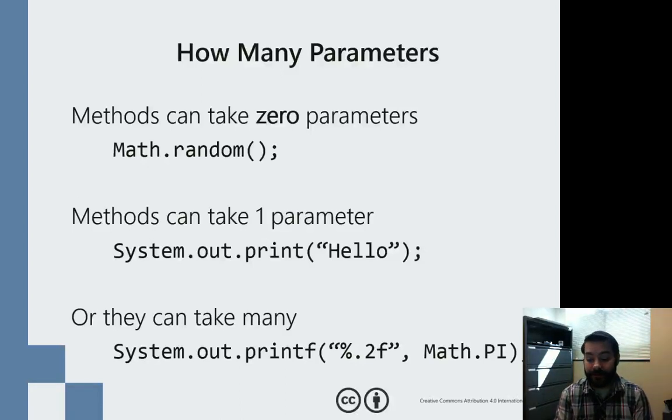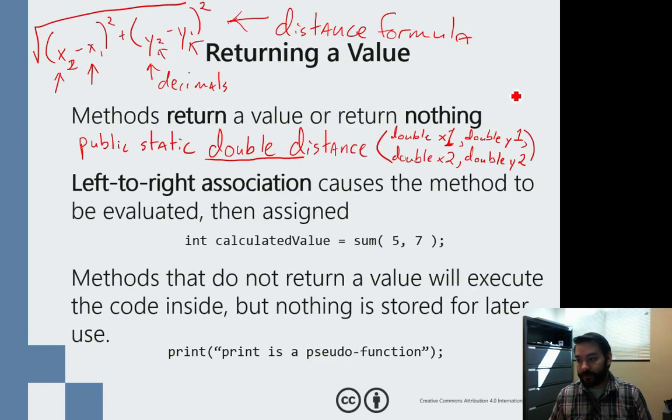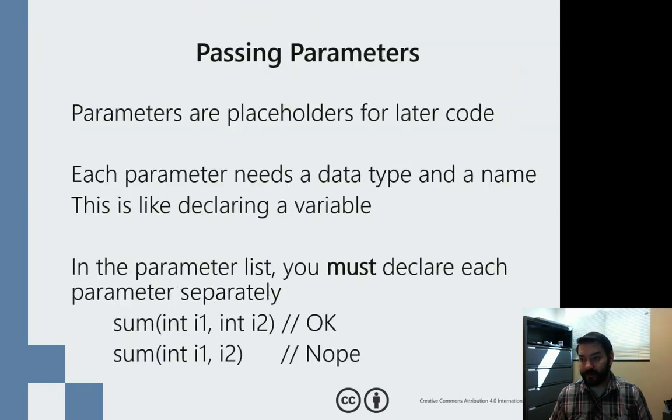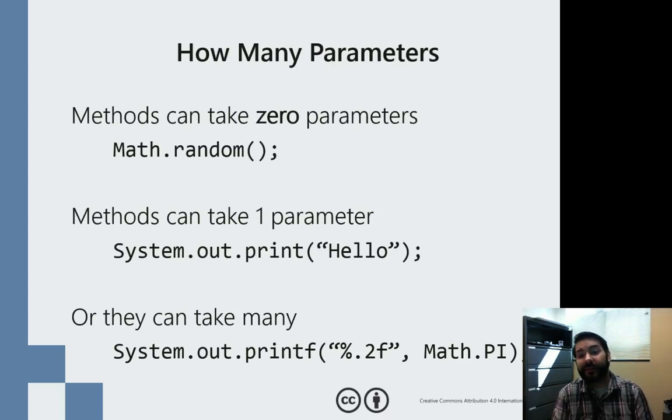Now inside that distance formula that we just designed, you saw that we put in 4 parameters. How many can I put in? I can actually put in as many as I'd like, which means I can put in 0.